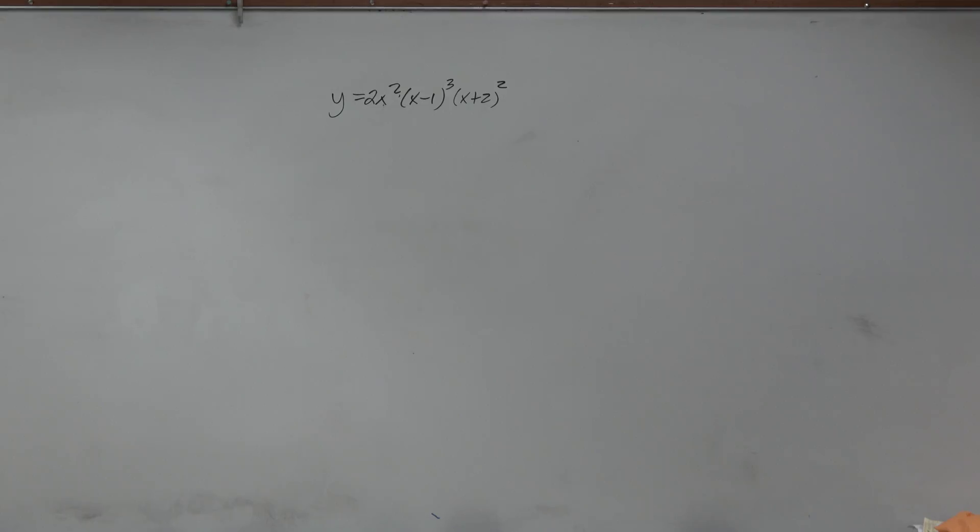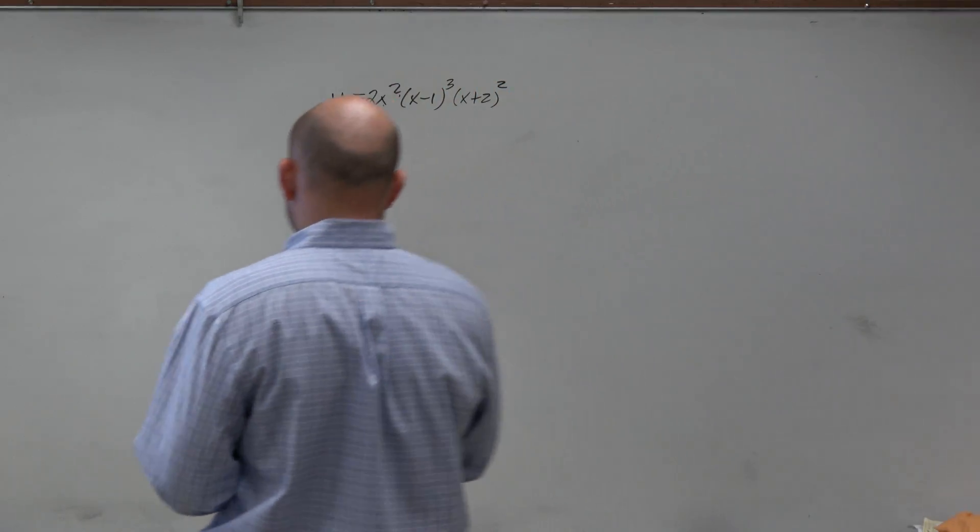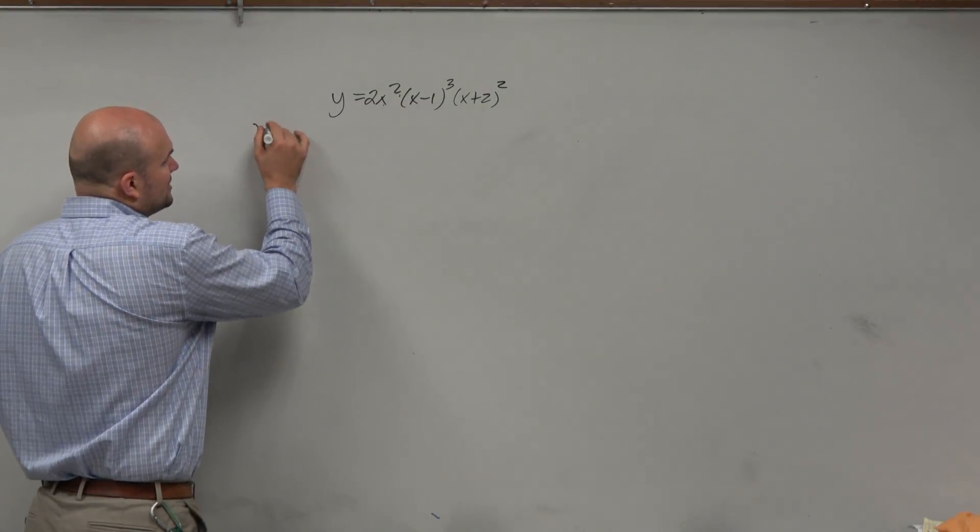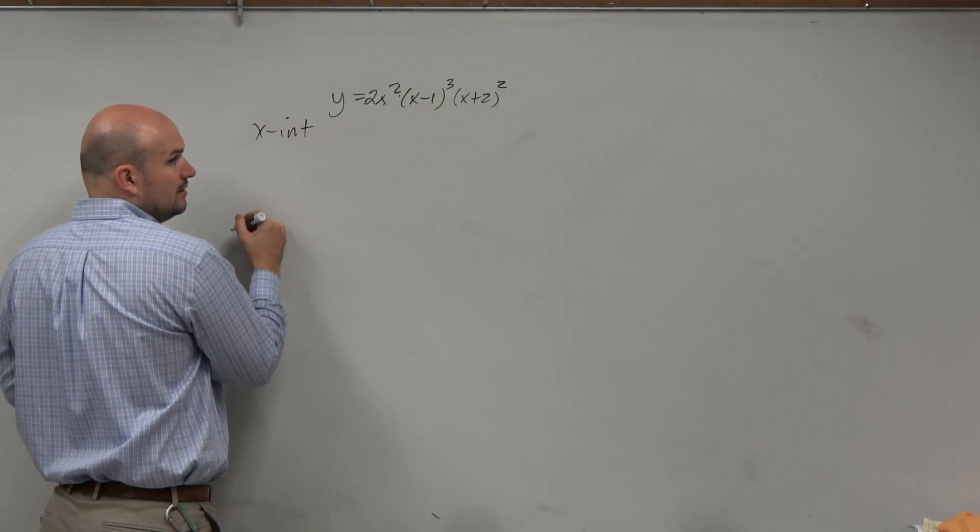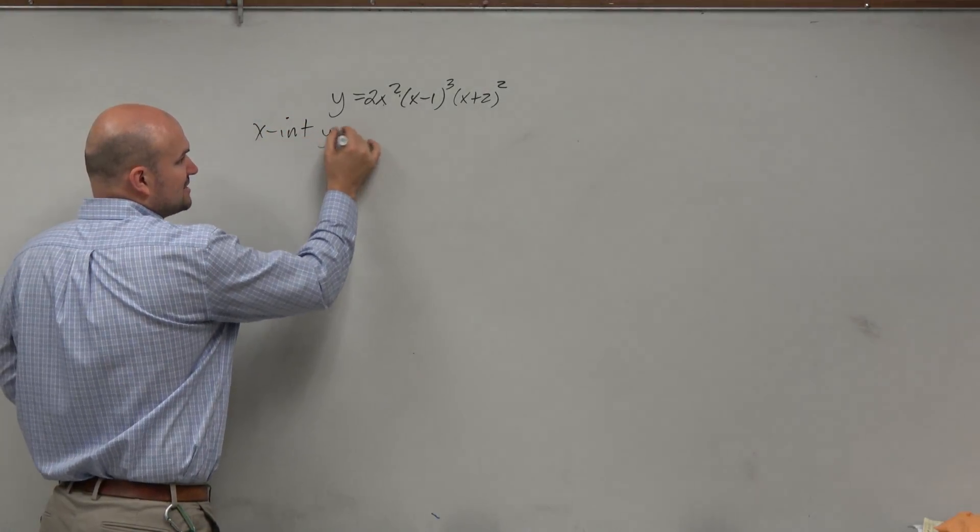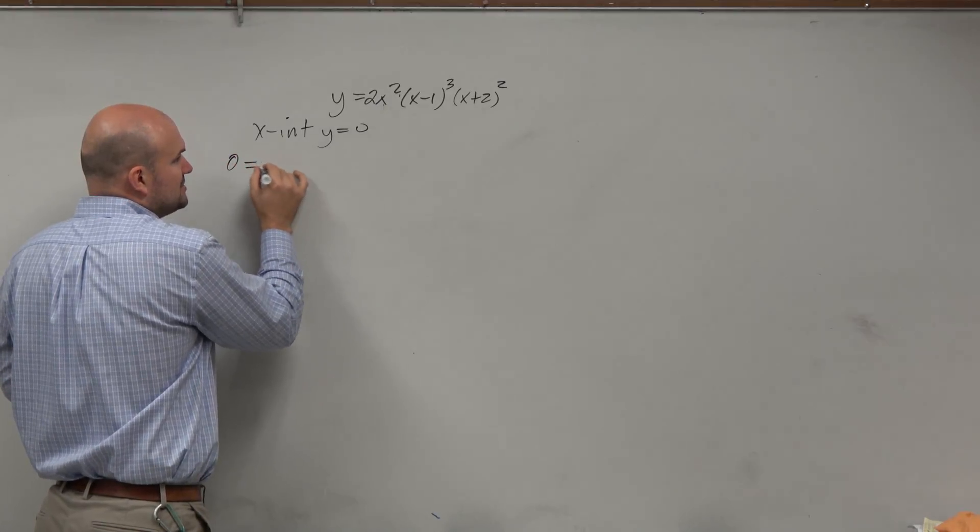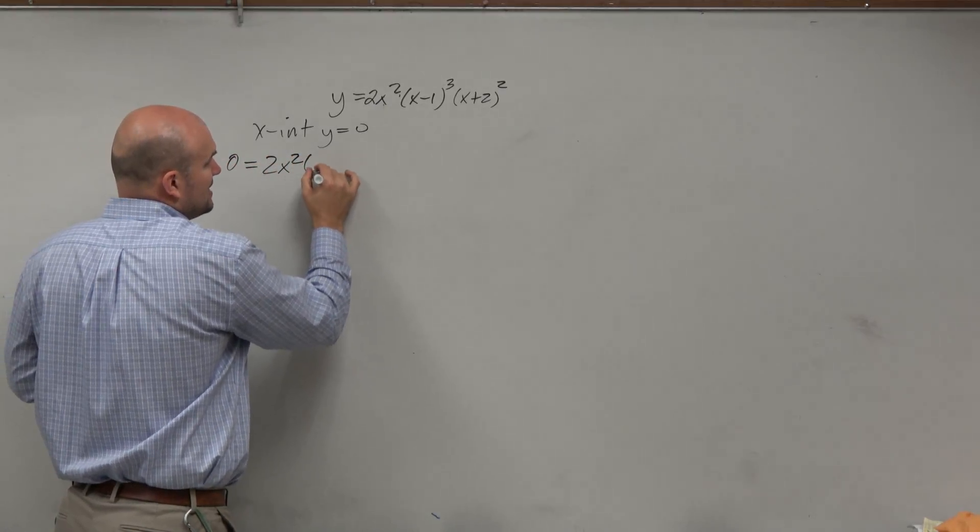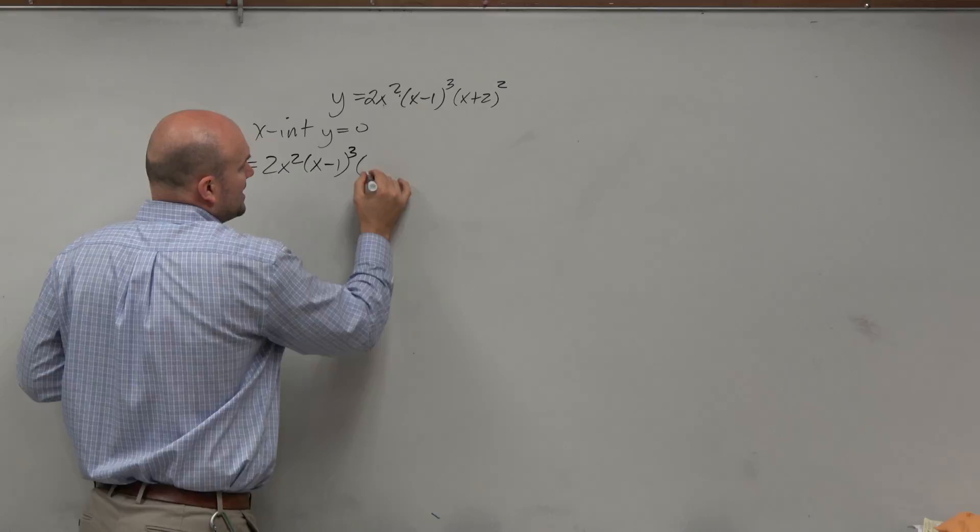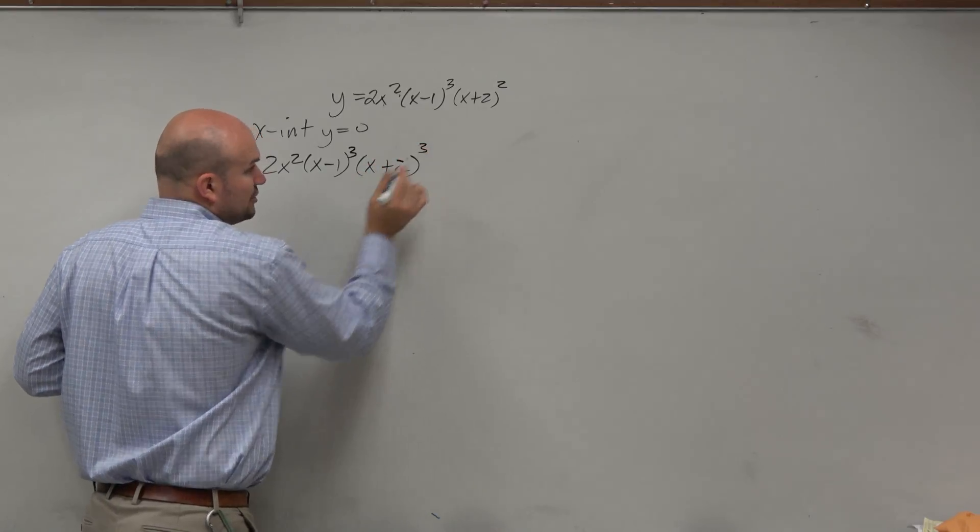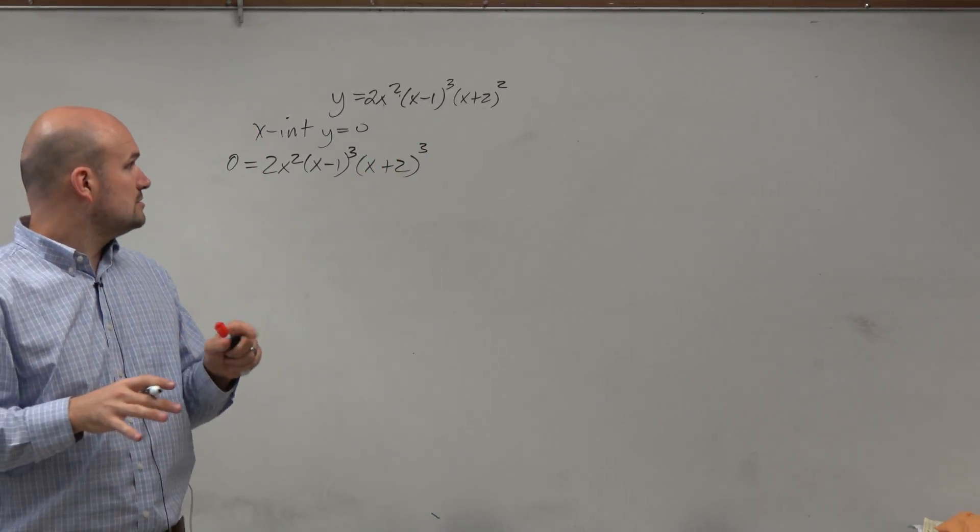Work it out long form, just to make sure I have everybody on the same page. So again, guys, remember the x-intercepts is basically when y equals 0. So I replace y equals 0, and I have 2x² times (x-1)³ times (x+2) squared.